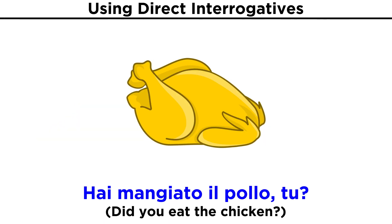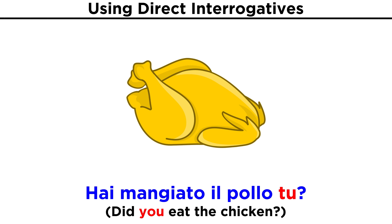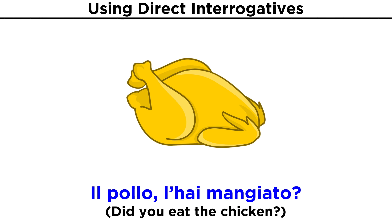A slightly modified version of this approach involves using subjects or objects in unusual places. This can be done to place emphasis on a particular word. Using the previous example, we could ask: Hai mangiato il pollo, tu? — asking did you eat it, as opposed to someone else. This question is of a type that requires only a simple yes or no answer, so just the intonation of your voice can be enough to let the listener know that you are asking a question.